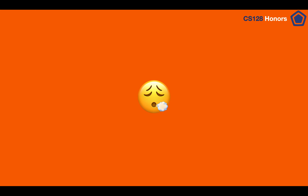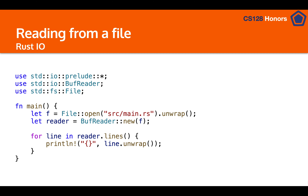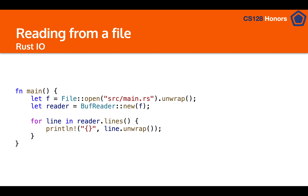Now let's talk about how to read from a file. We again have `use std::io` and `use std::fs` — don't worry about those for now. In `main` we have `File::open()`, which takes a string path just like you'd use in bash. Here we're going into the source directory and opening `main.rs`. The `.unwrap()` call will crash the program if the file doesn't exist.